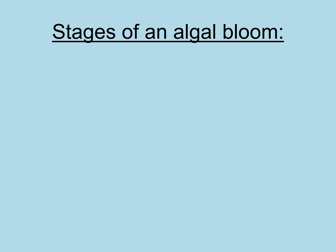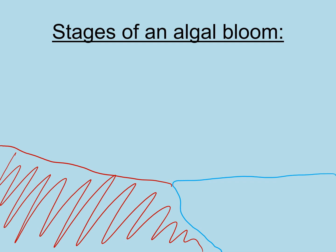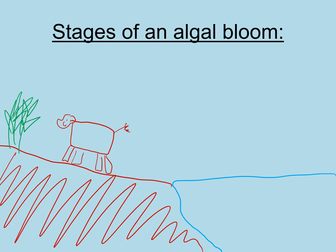I'm going to talk you through the stages of an algal bloom. First, we have a lake next to a farm with crops growing, and possibly some animals like cows on the farm.